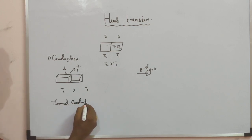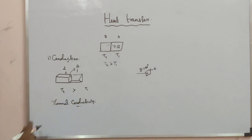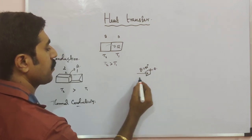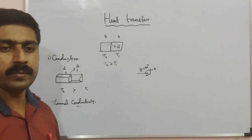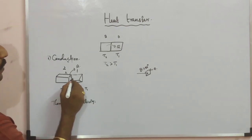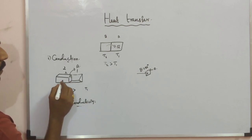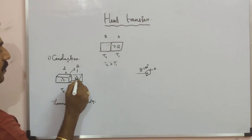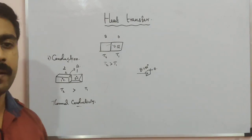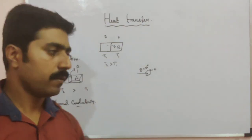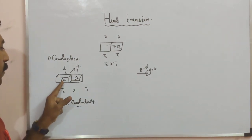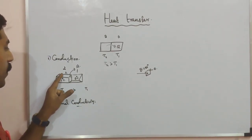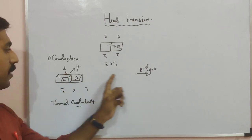Thermal conductivity is defined as the amount of heat energy transferred normal to the area of cross-section per unit length, per second, per unit degree temperature difference. For example, if T2 is 2 degrees Celsius and T1 is 0 degrees Celsius, the temperature difference is 1 degree Celsius. The heat transferred through the conductor of unit length and unit area of cross-section gives us the thermal conductivity.